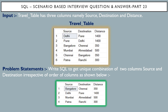We are left with row number four — Mumbai and Ahmedabad — which appears only once with no interchanged pair, and row number six — source as Patna and destination as Ranchi with distance 300 kilometers. So this is all about the problem statement. Let's see how we can solve this in SQL Server.